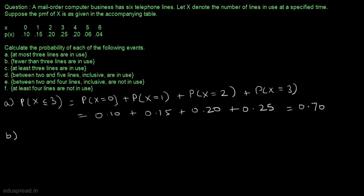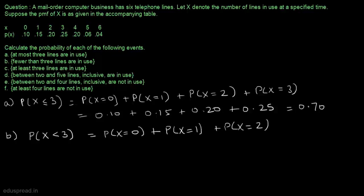In part B, we have to calculate the probability that fewer than three lines are in use. That means we have to calculate the probability that x is less than 3. This is equal to P(x=0) + P(x=1) + P(x=2), which equals 0.45.